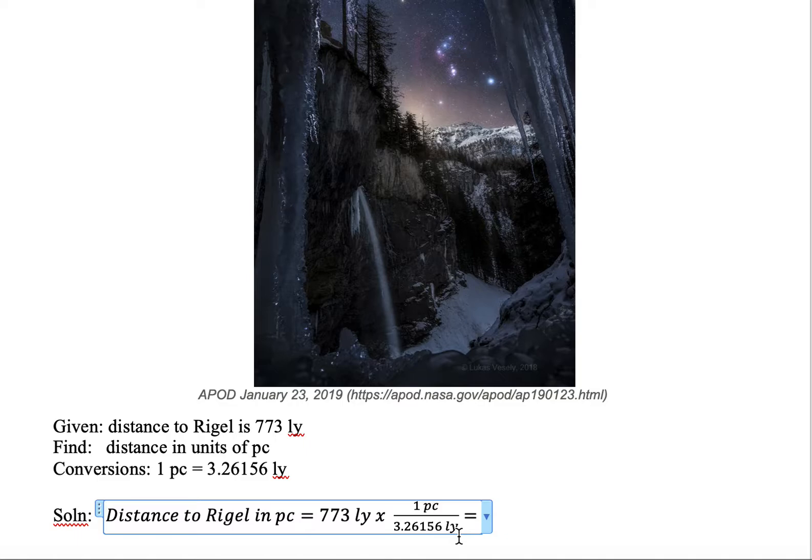So we're going to multiply by the conversion, making sure that the light year unit of the conversion is in the denominator and the parsec unit of the conversion is in the numerator.